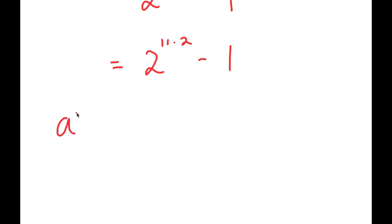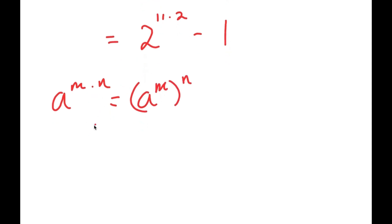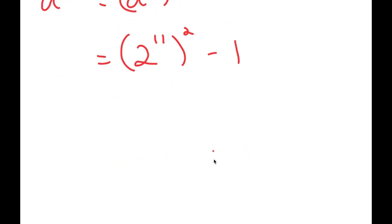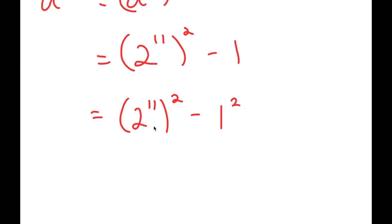If I have something in the form a to the power of m times n, this is equal to a to the power of m to the power of n. So 2 to the power of 11 times 2 is equal to 2 to the power of 11 to the power of 2, minus 1. Now, 1 is the same thing as 1 squared, so now I have 2 to the power of 11 to the power of 2, minus 1 squared.